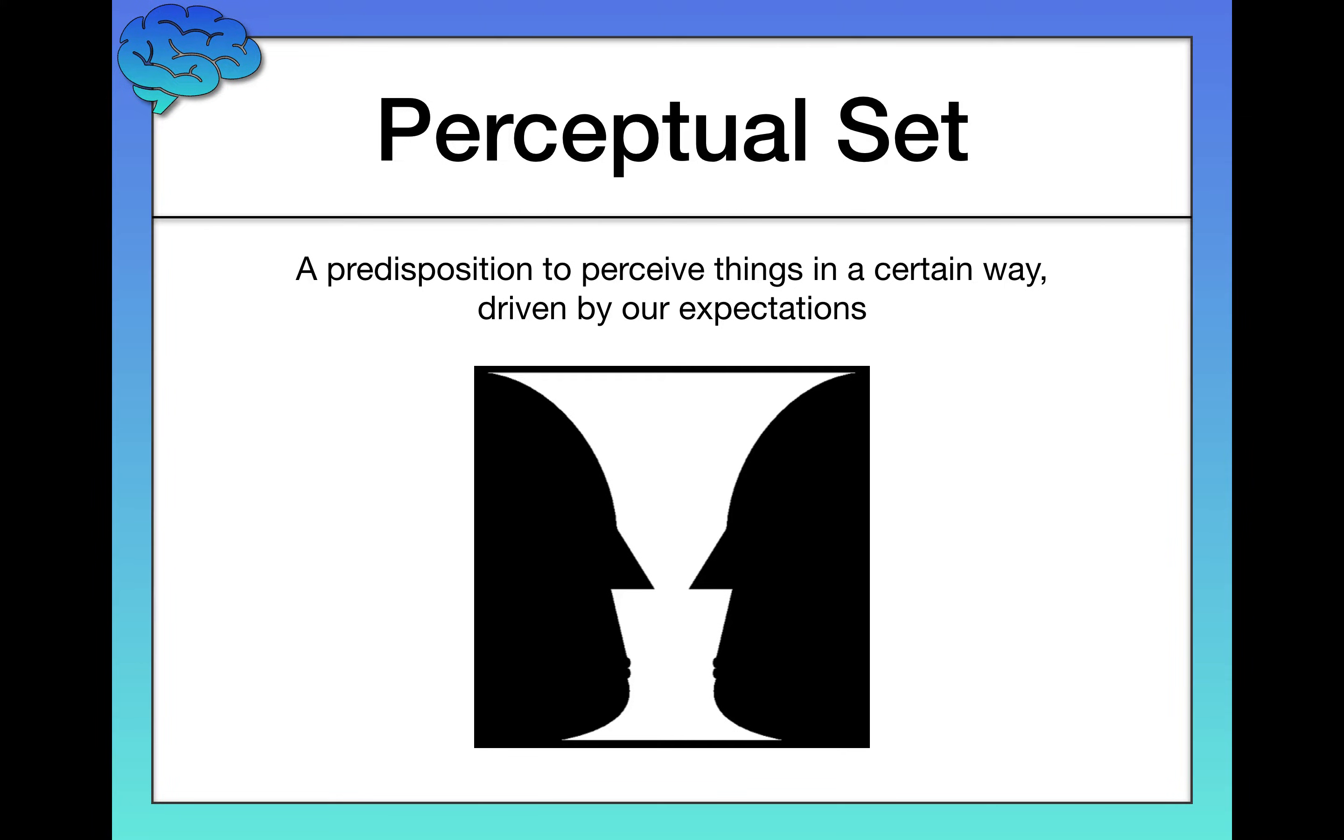But imagine had I labeled this and I said two faces, right, and that was the label for this image, you'd probably focus on the two faces. That would be your perceptual set and that would guide your interpretation of the image.